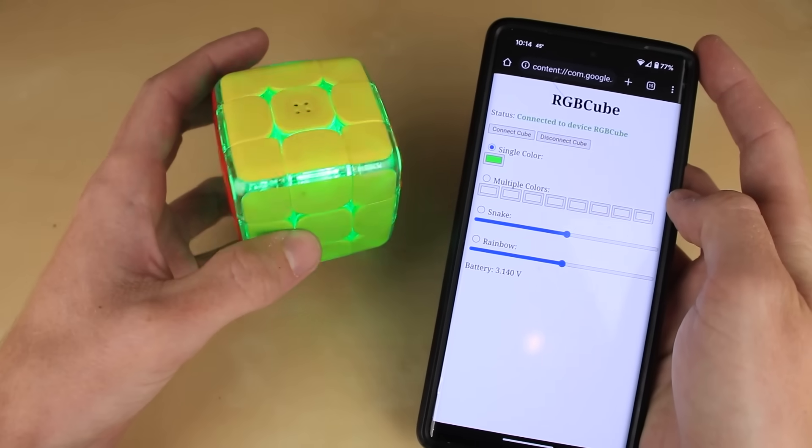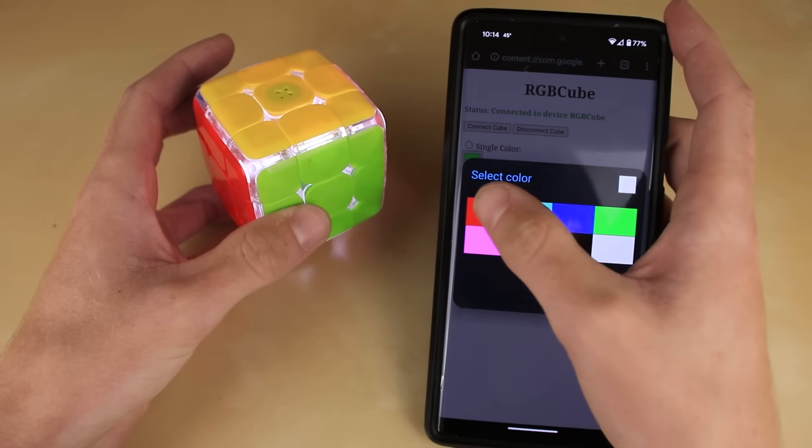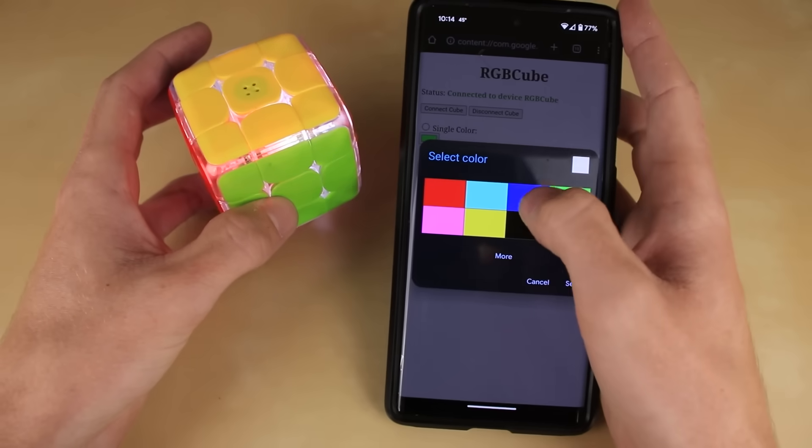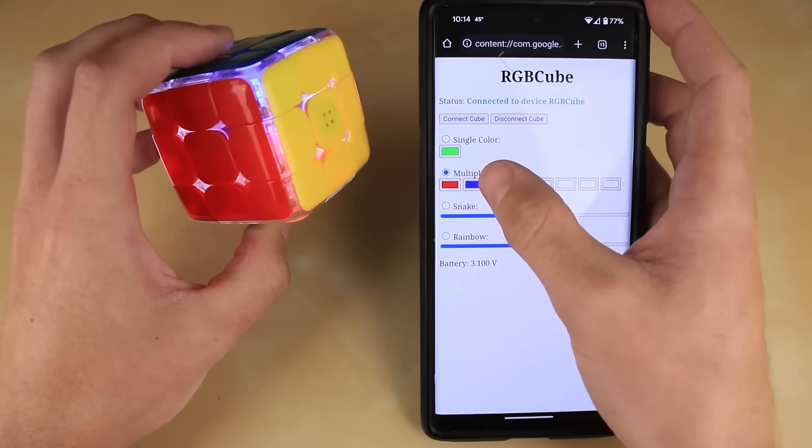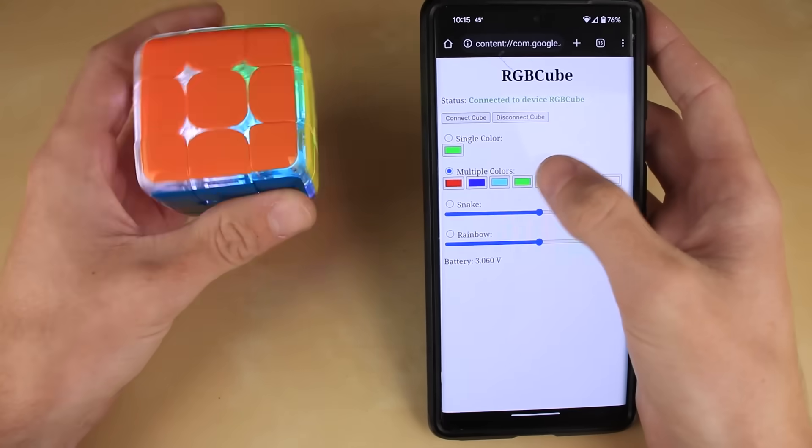Because each of the LEDs can be controlled individually, we can also use the multiple colors option and choose whatever color we want for each of the eight LEDs. So for example, that one can be red, the next one over can be blue right there. The next one can be a lighter blue right there. I'll make the next one green, so that's right there.